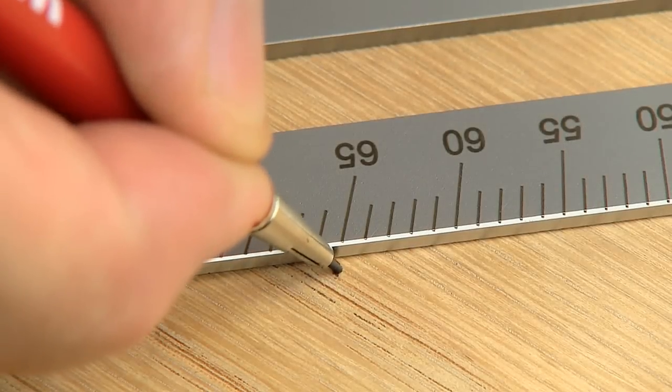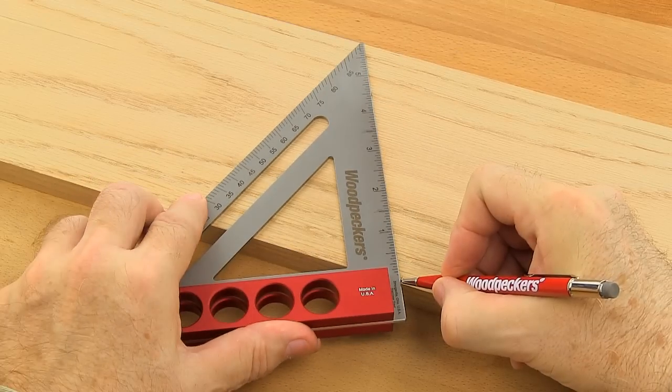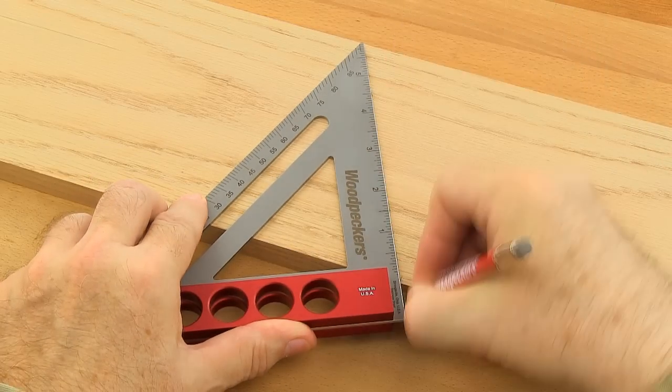Marking angles between 0 and 90 degrees is quickly achieved by pivoting off the work using the inside corner of the square's handle.